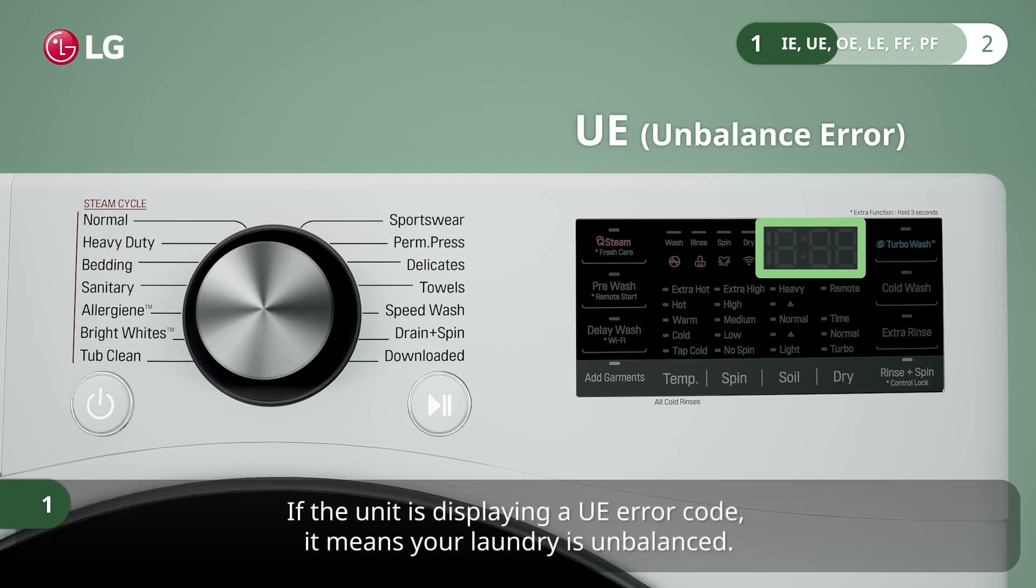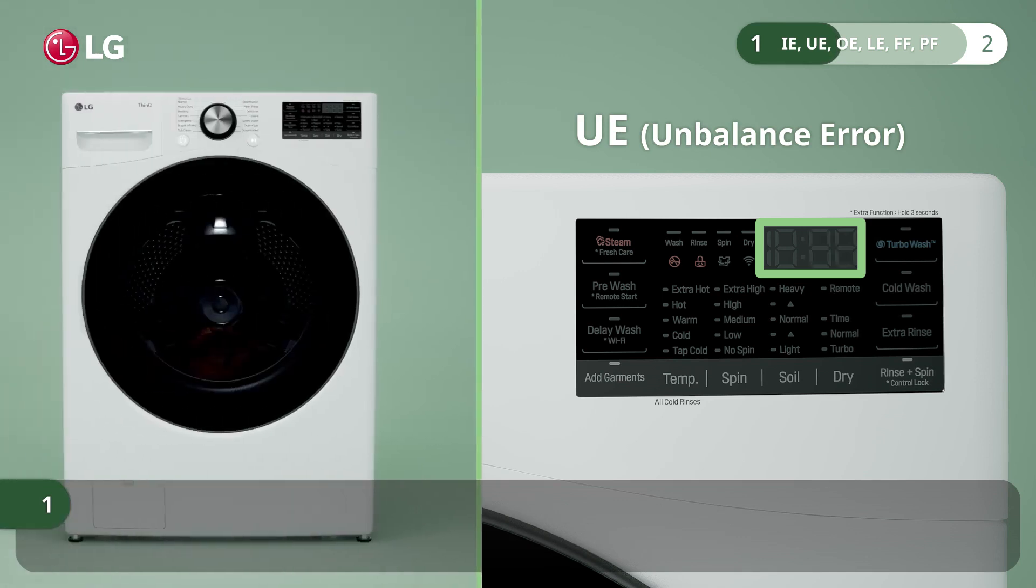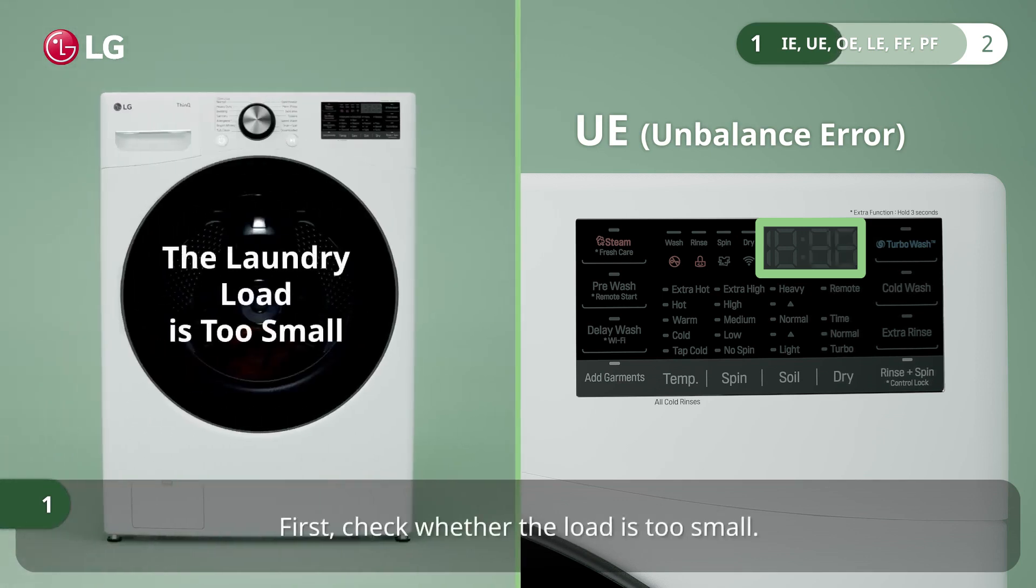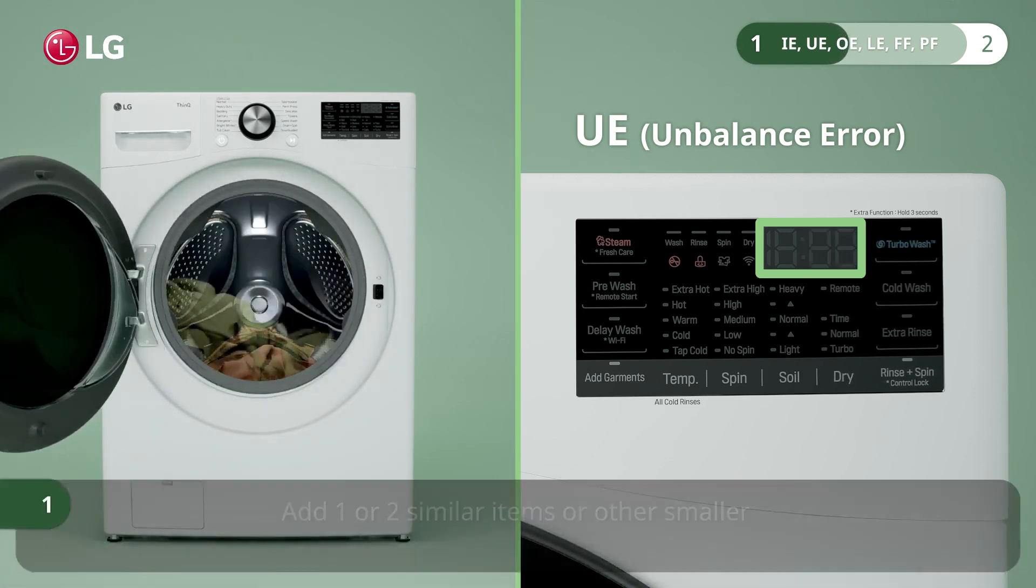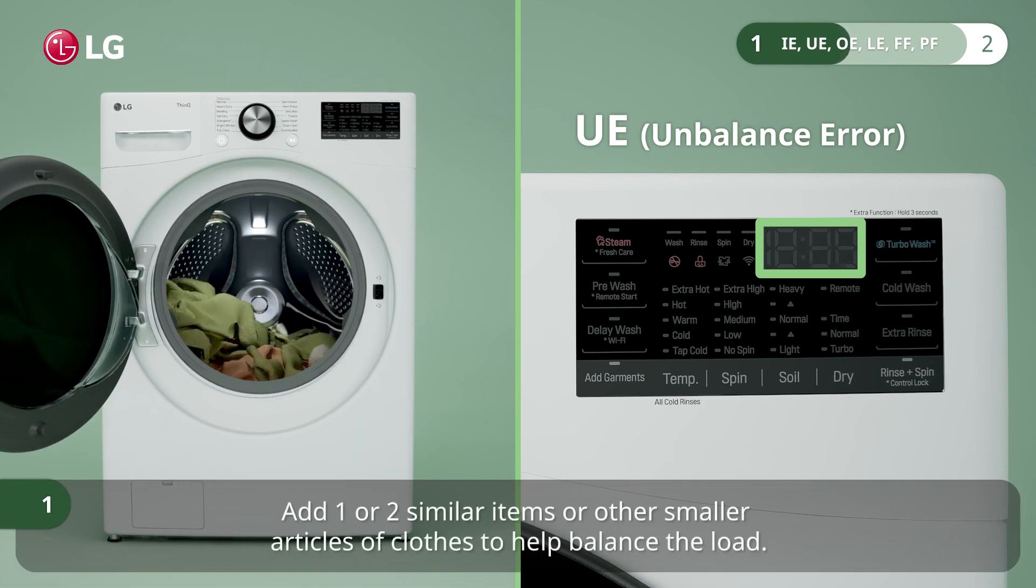If the unit is displaying a UE error code, it means your laundry is unbalanced. First, check whether the load is too small. If so, the drum may stop spinning or may be interrupted. Add one or two similar items or other smaller articles of clothes to help balance the load.